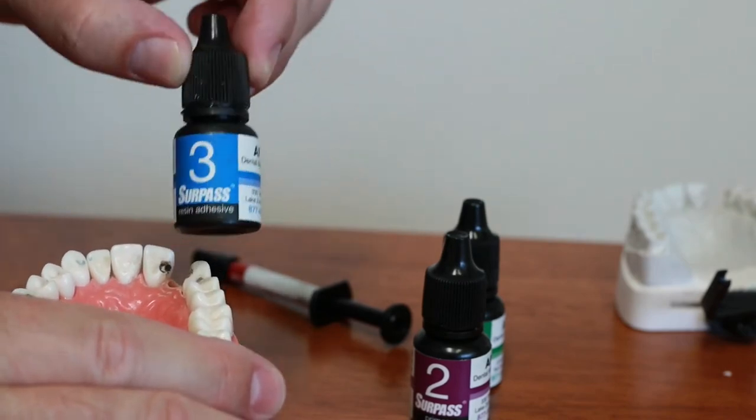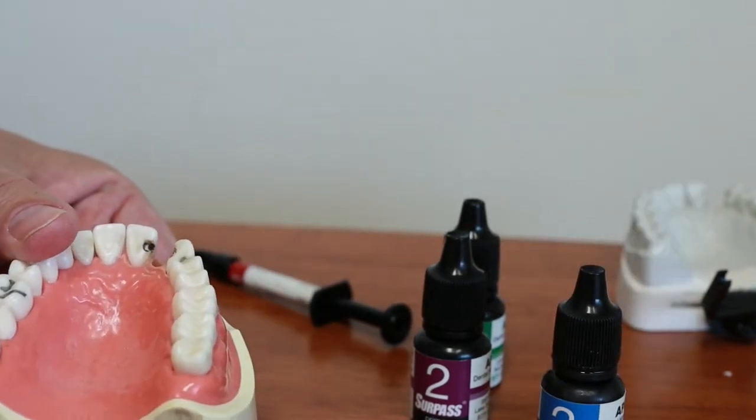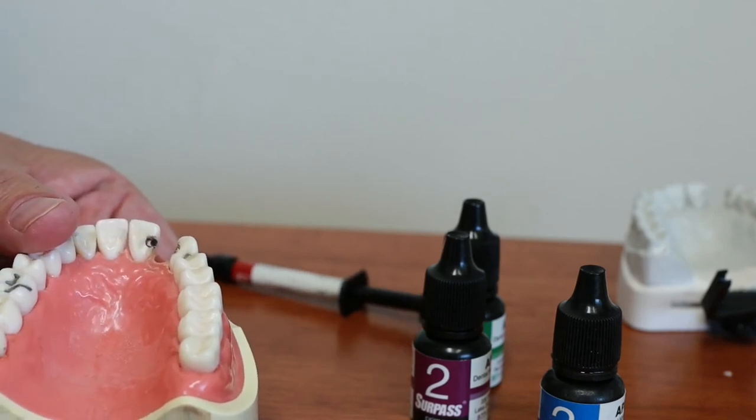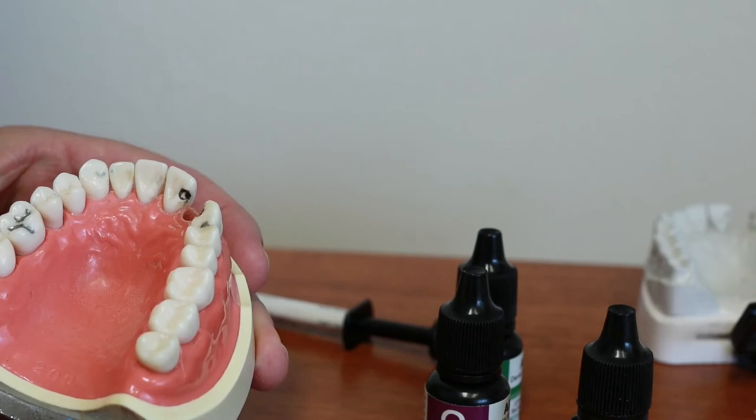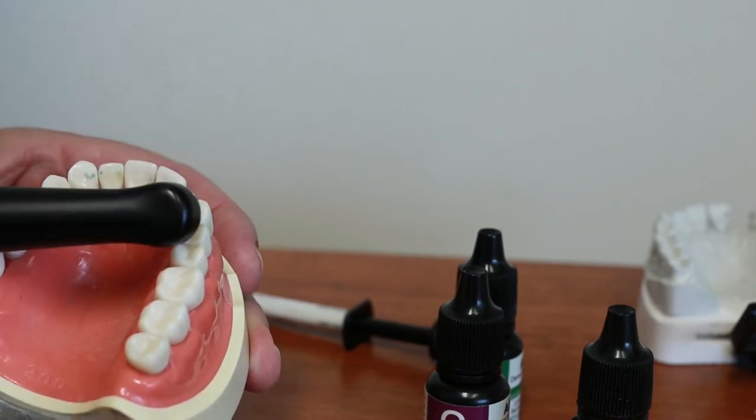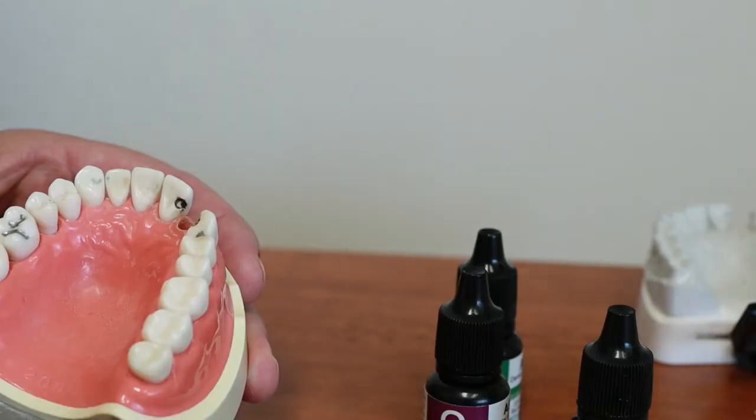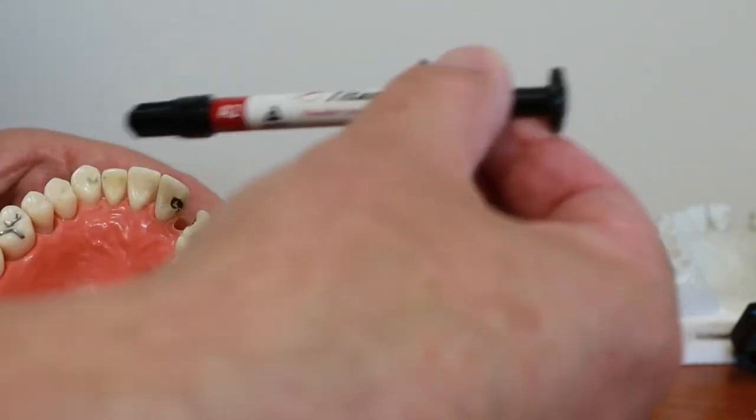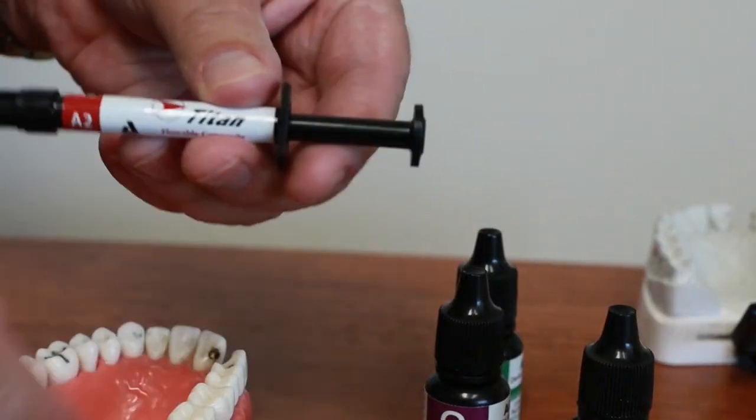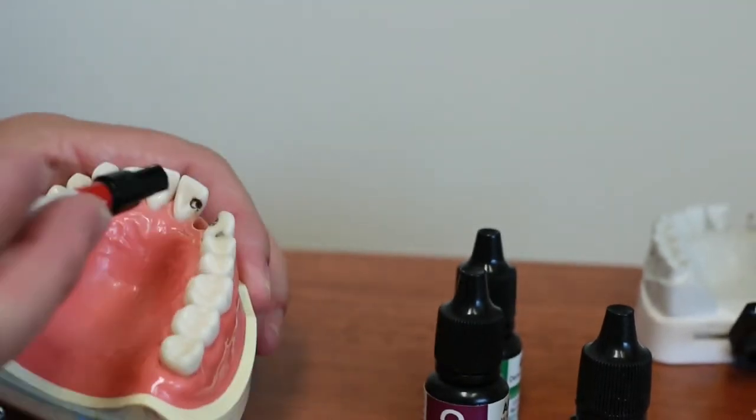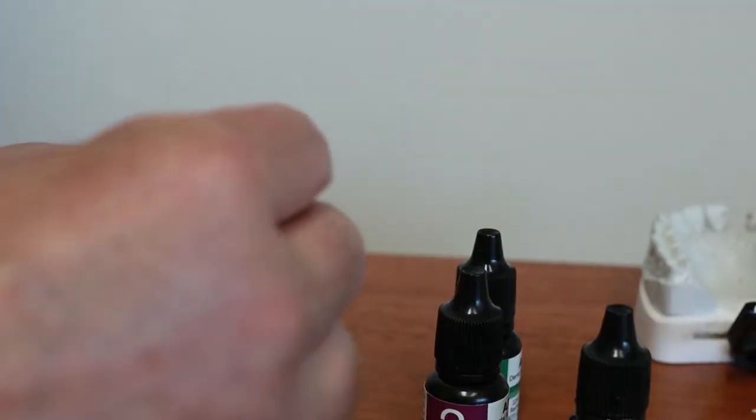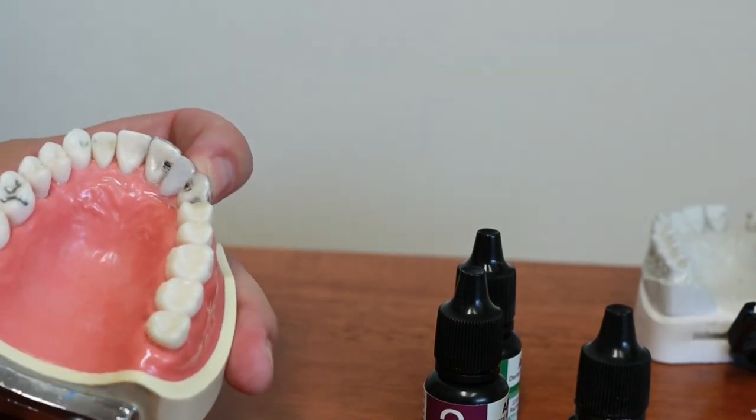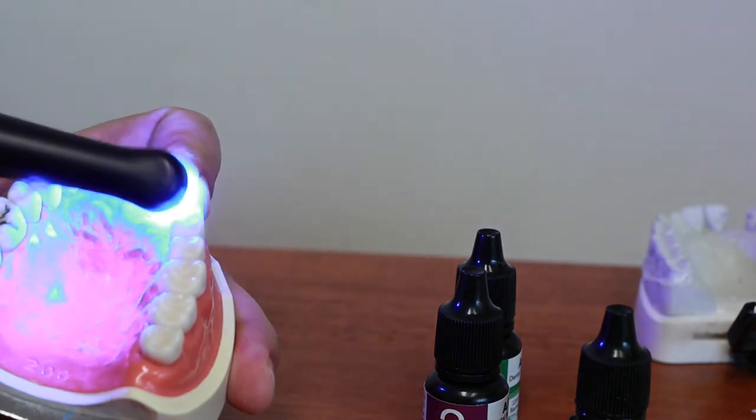With the Surpass system I will zap it with my curing light, just a blue light, set it up. Once it's set up I'll use some flowable composite. I use Titan, the brand I use is called Titan, again made by Vista Apex. Put a little bit in each prep. Take the Maryland bridge, set it in place. Put the prep guide over it just to make sure the bridge is in the correct spot. And then I'll zap it with my light again for another ten seconds.